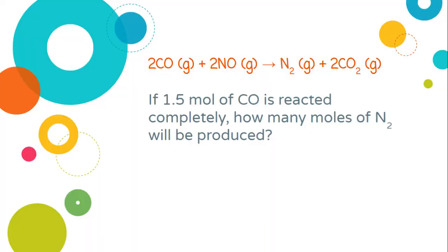Anytime we have a stoichiometry problem, we have to start with a balanced equation. Here, one has already been provided for us. Our example problem reads: if 1.5 moles of carbon monoxide is reacted completely, how many moles of nitrogen will be produced? Since we're doing the cross multiplication, we are going to set up a proportion.